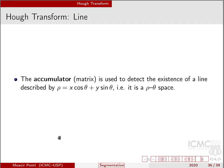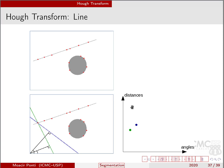There is an accumulator, a matrix, used to detect the existence of a line described by this rho-theta space. So the idea is that we can have different distances and different angles. Let's say that instead of having a histogram, usually a histogram considers just one variable. In this case we consider two variables. So different combinations of distances and angles, so different types of lines.